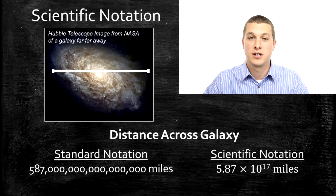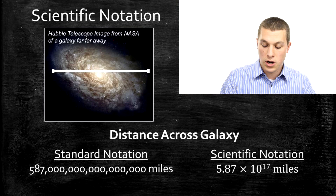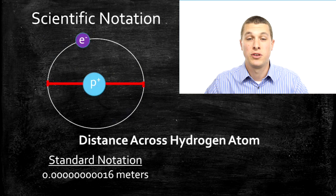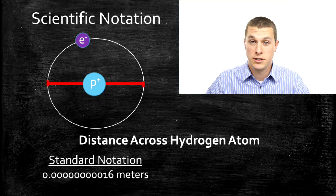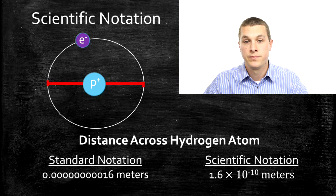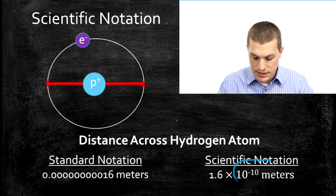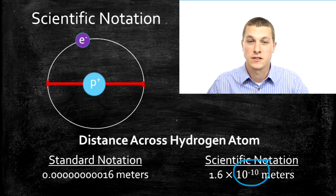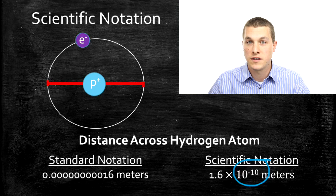What that's basically saying is you're going to multiply 5.87 by 10 seventeen times, and that's how you get a really big number. You can also use scientific notation to talk about really small numbers — say, how far it is across a hydrogen atom. If you write it in standard notation, it's a bunch of zeros and then a tiny fraction. We can write that in scientific notation too, and it takes up much less space. The key difference is that before we had a positive exponent, and now we have a negative exponent. Whenever you see a negative exponent in scientific notation, that's telling you the number is really, really small.